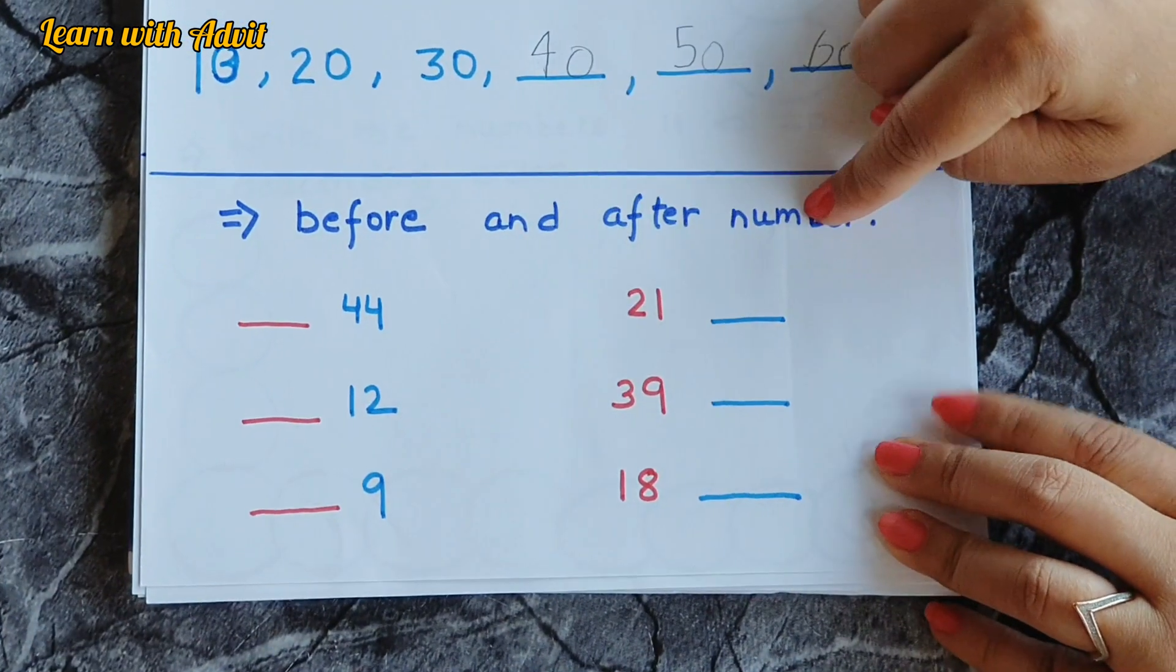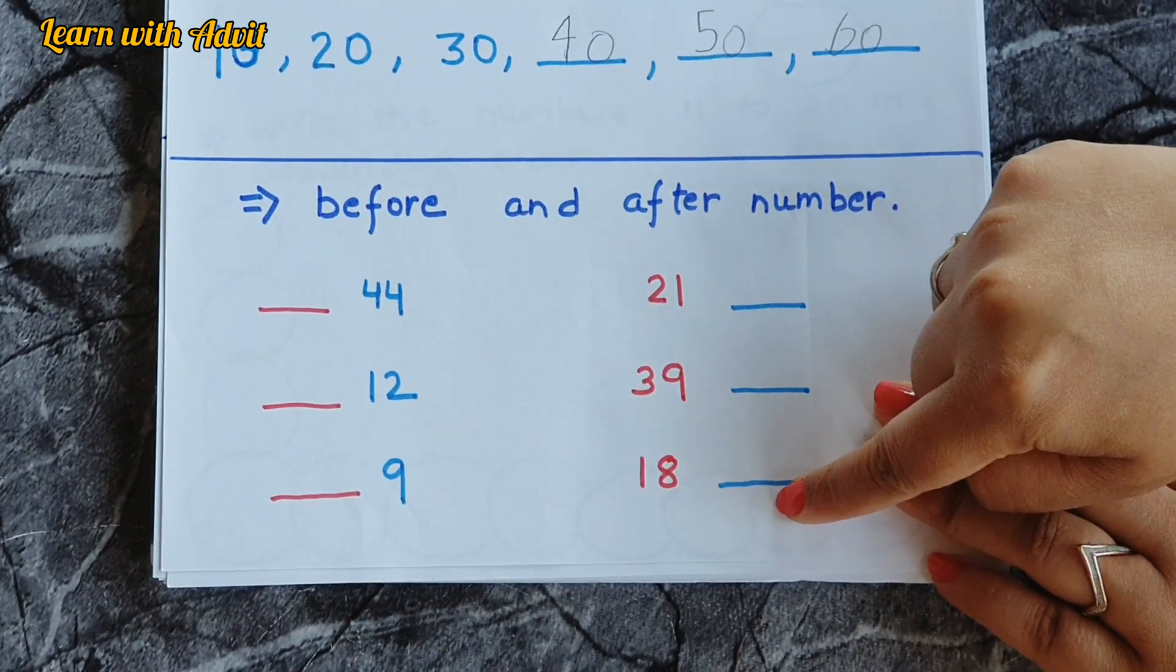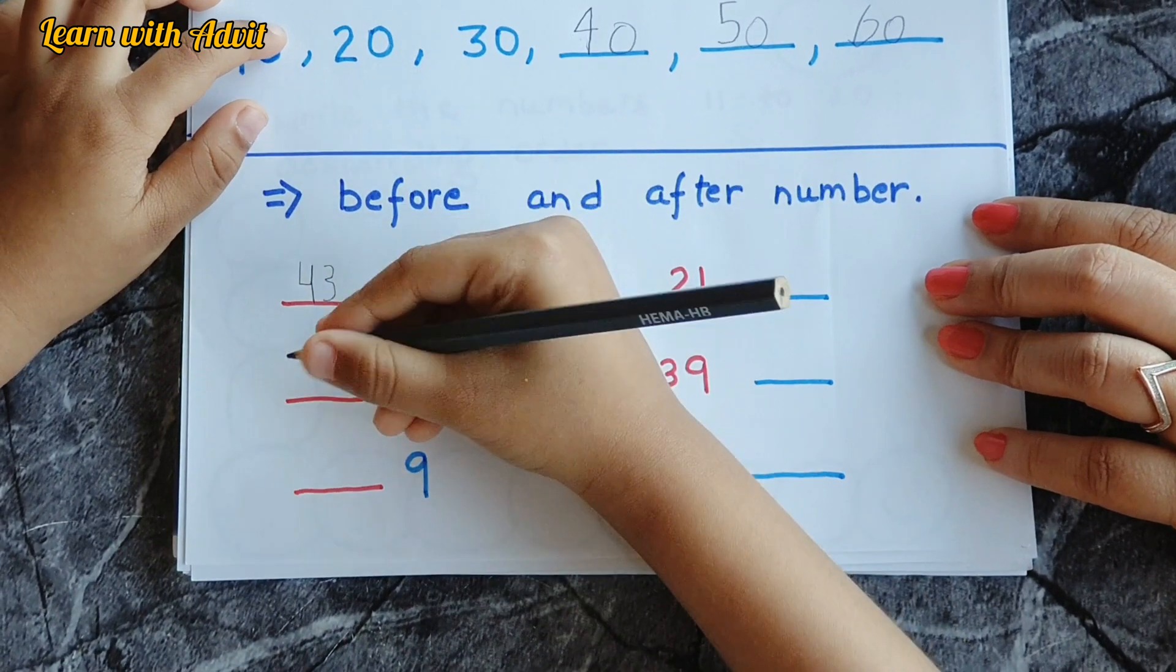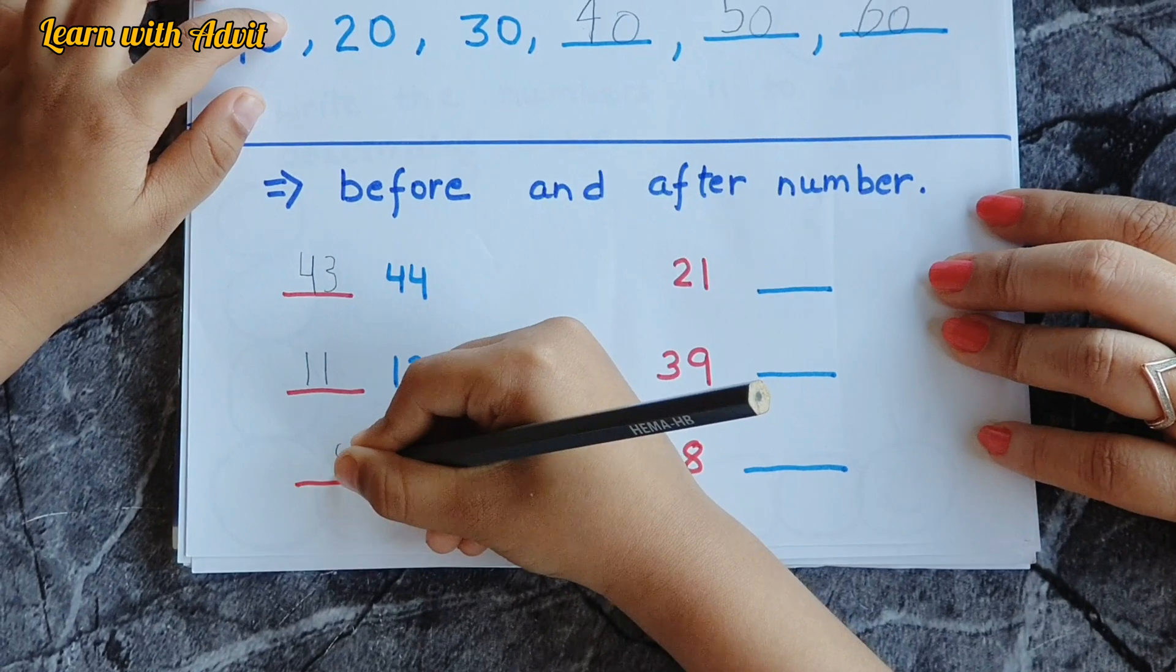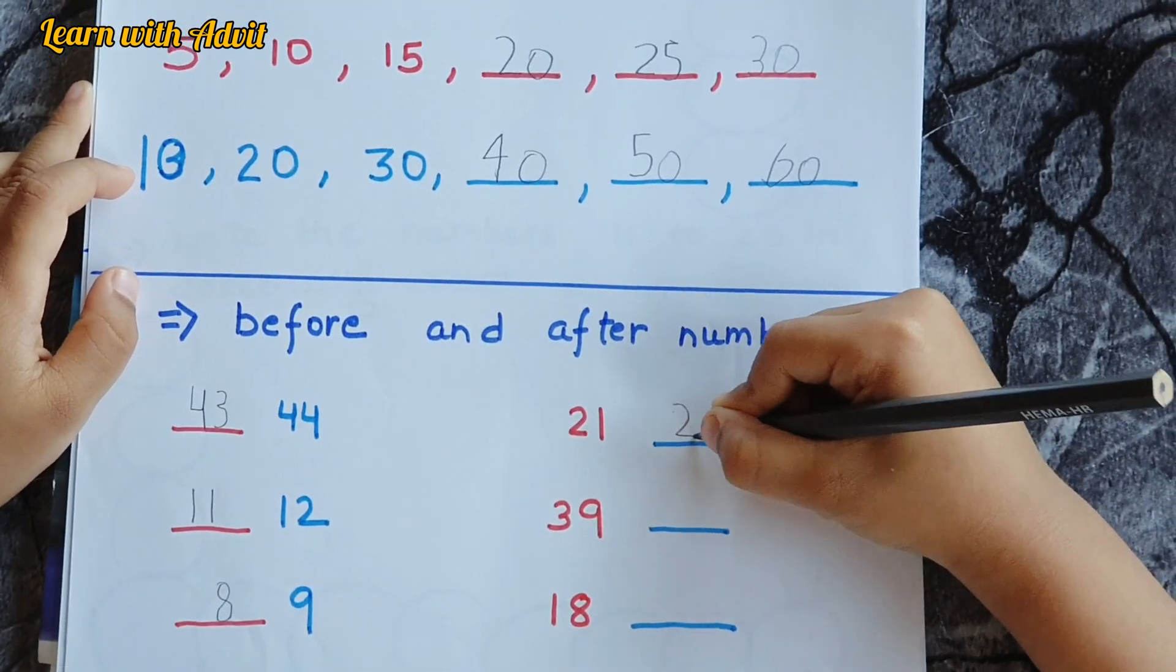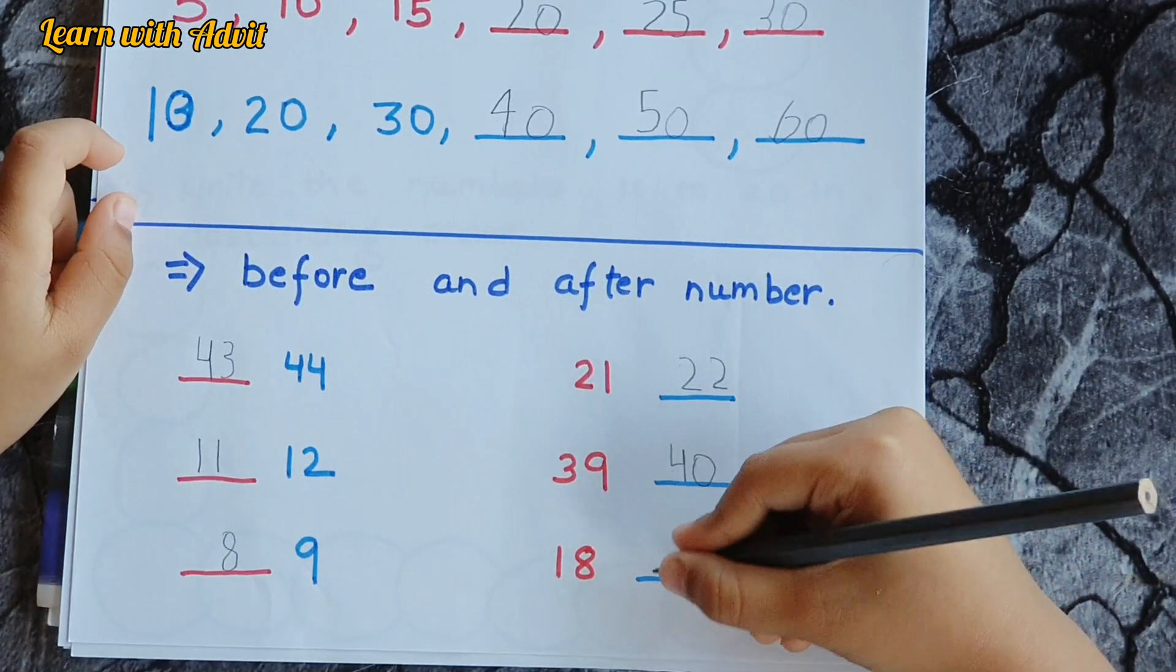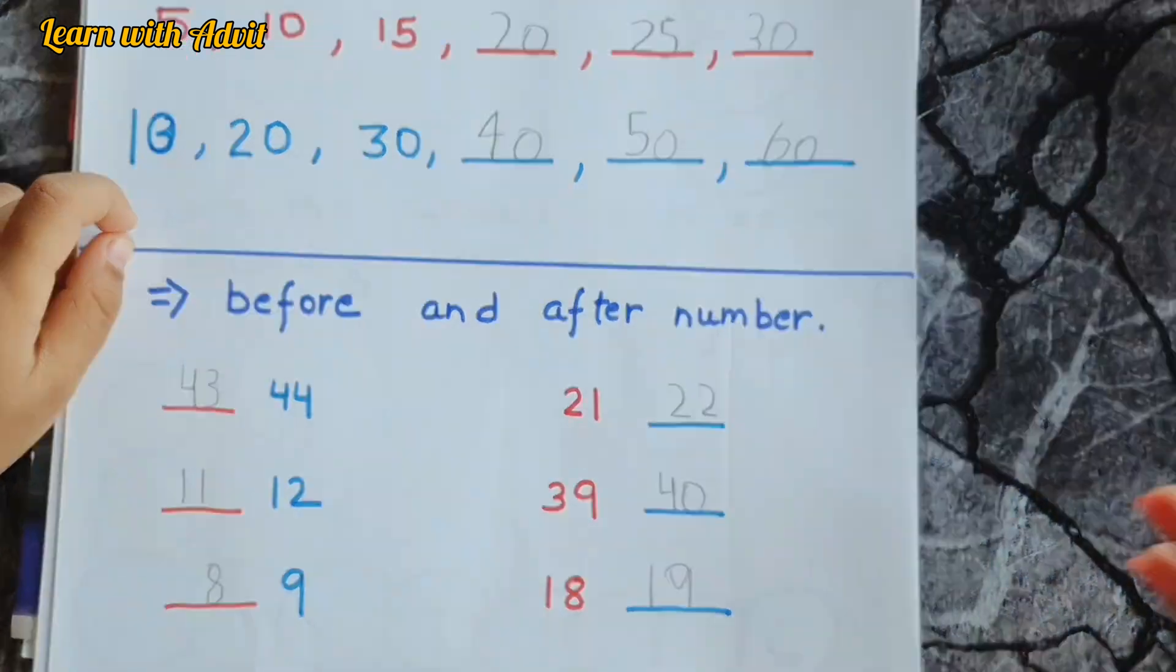So this is for before and after. Here you have to write the before and here you have to write the after. Come and write it down first. Forty-three, eleven, eight. Write after. Forty-two, thirteen, forty, nineteen. Very good.